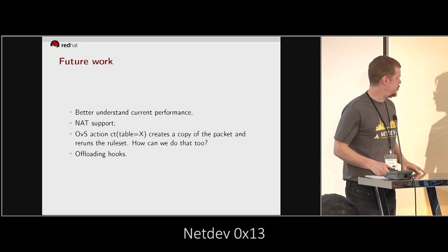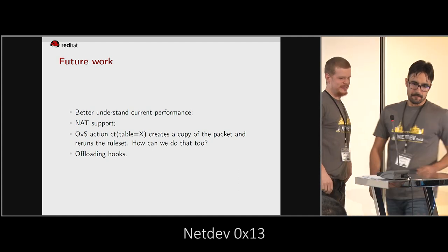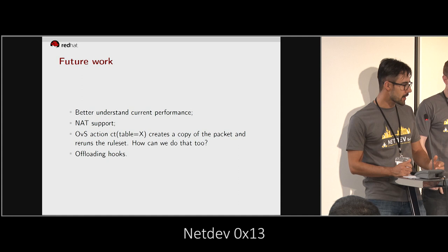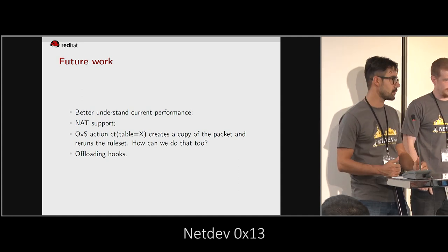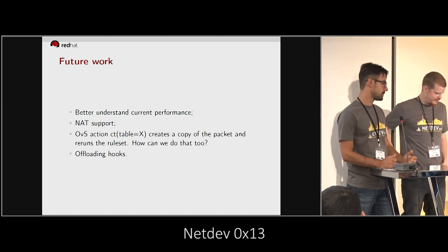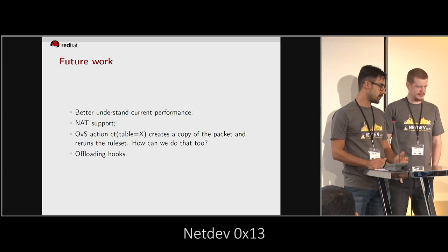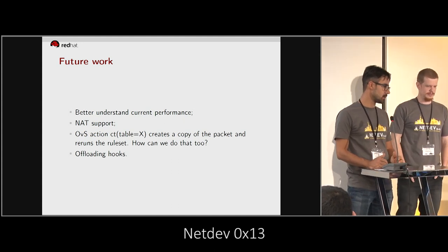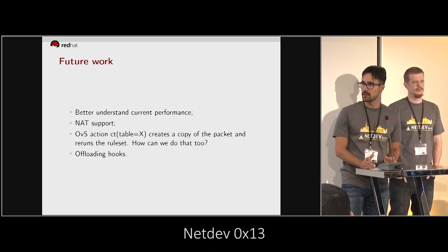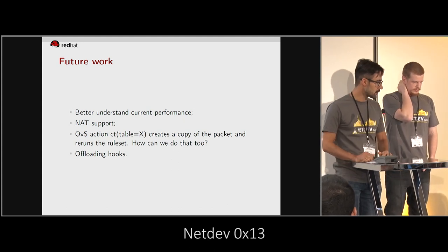And then finally there are offloading hooks. The offloading hooks would be the conntrack integration so that entries can actually be offloaded to a card — that's like one step and a half inside offloading already, but that would be needed. In theory it shouldn't interfere with the CT action and the flower classifier, but it's good to keep an eye on it.